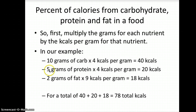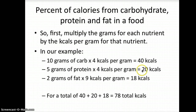For protein, in our example, we had 5 grams of protein. We know that there are 4 calories per gram of protein, so 5 grams times 4 calories equals 20 calories. Same for fat: 2 grams of fat times 9 calories per gram equals 18 calories.